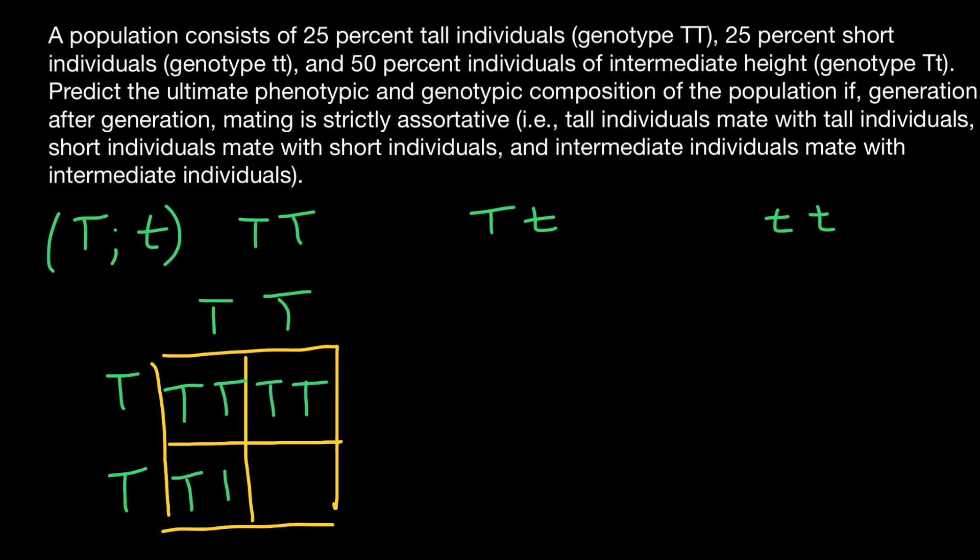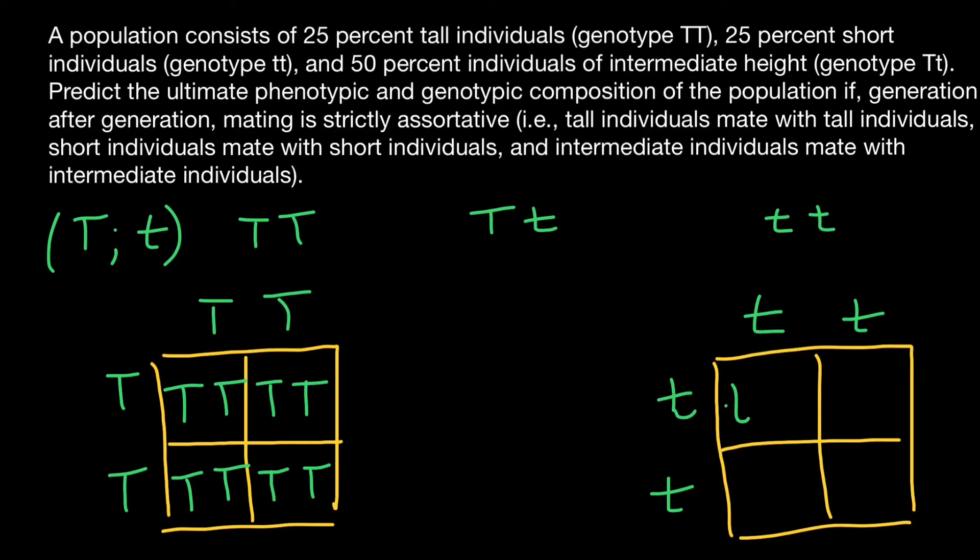And the same picture we see when we have two parents that are short and homozygous recessive. Of course, 100% of the progeny is going to be short. No variants here.